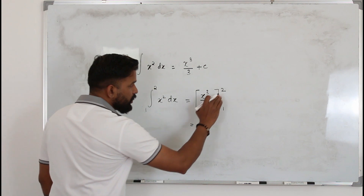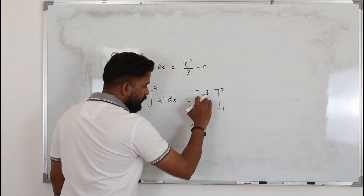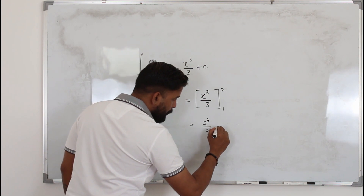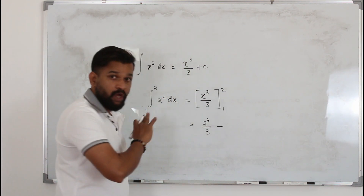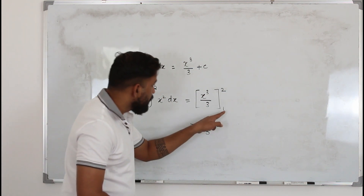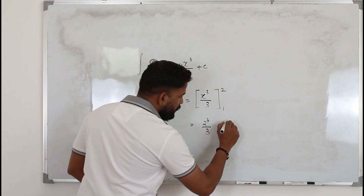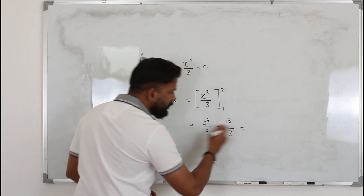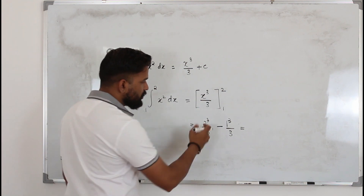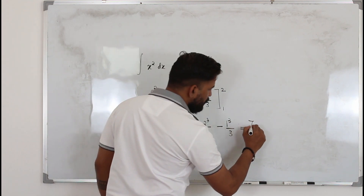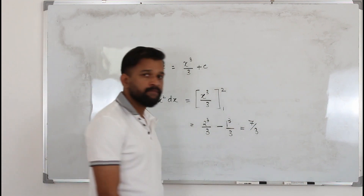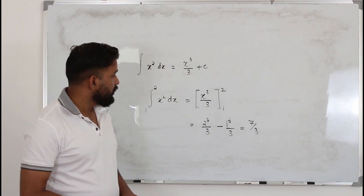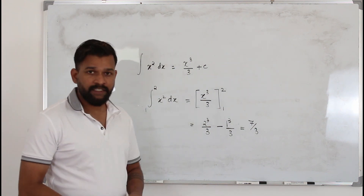Now you need to replace x by the upper limit. So it's 2 cubed over 3, minus — it's always minus — replace x by the lower limit: 1 cubed over 3. Simplify this. So it's 2 cubed is 8, minus 1 is 7, over 3 is the answer. That's how we find the value of the definite integral.